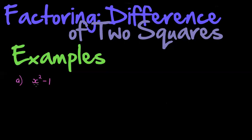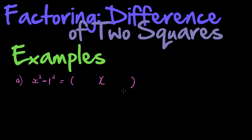What I do notice here is that I have two terms and the two terms are being subtracted — there's a different sign. This one is positive and that one is negative. The signs of the two terms are different. If that's the case, then the next question is: can both be written as squares? I've got x squared already, and 1 can be written as 1 squared. If that's the case, I've got the difference of two squares.